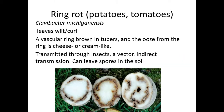Ring rot — as you can see in the diagram, this shows a vascular ring of tubers that ooze from the ring, which is not very pleasant. It's transmitted by insects through indirect transmission.